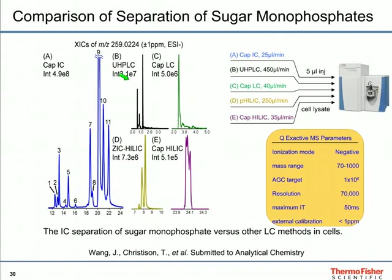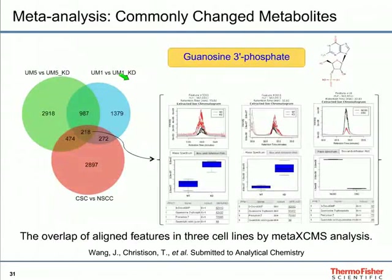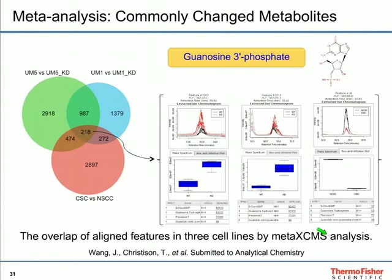To find out the commonly changed metabolites in all three cell lines — UM1 versus UM1 knockdown, UM5, and cancer stem cells versus non-stem cancer cells — may provide more focused information and understanding of the metabolic changes. SAFE provides similar results to MetaboAnalyst online, but meta-analysis is not available in SAFE at this moment, so we showed the results of MetaXMS data here. We detected 3,000 to 4,000 significant features in the three cell lines, and among them, 218 features are commonly changed features across all three cell lines. One example is GMP, which is significantly higher in the SOX11 knockdown cells and in the non-stem cancer cells.